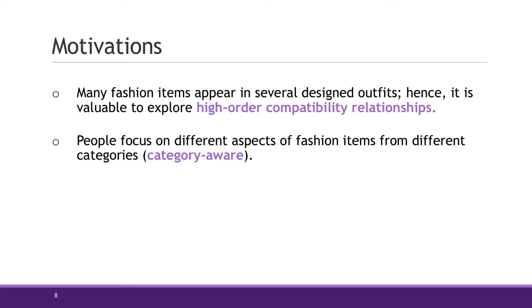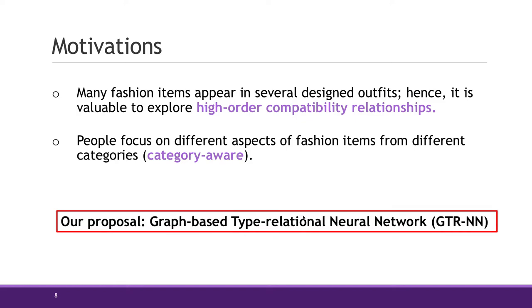Secondly, in reality, people usually focus on different aspects of clothes from different categories. For example, people are more likely to focus on color and material for blouses and pants, while they may pay attention to shape and color for jeans and shoes. So, the framework we propose is named the Graph-Based Type-Relational Neural Network.